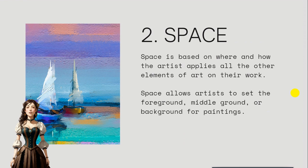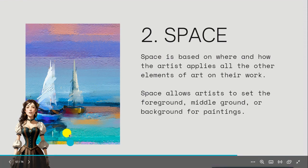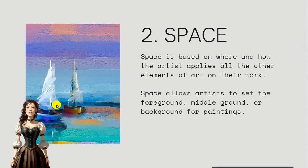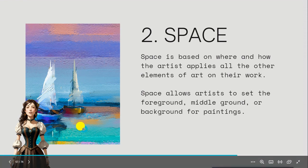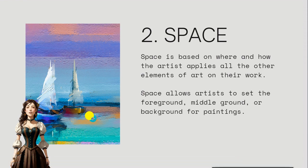Space is based on where and how the artist places all other elements of art in their work. Space allows artists to set the foreground, middle ground, and background for their painting. Space will ultimately lead to depth, but for now let's think about space as placement. Look at these two boats — where are they placed? Not at the edge, not up here, but somewhere a third of the way up. You could also see lines that break the horizon. These two boats are close to each other but not further out into the ocean, and not quite kissing the harbor. That is how space works.